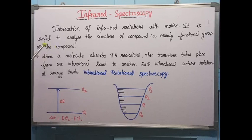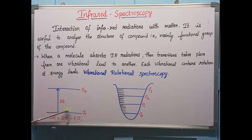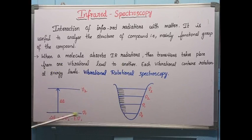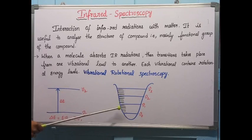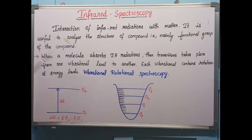When a molecule absorbs IR radiations, a transition takes place from one vibrational level to another. Each vibrational level consists of rotational levels, and transitions also take place inside those rotational levels. Because the absorption of infrared radiations brings changes in both vibrational and rotational energy levels, we call this vibrational-rotational spectroscopy.